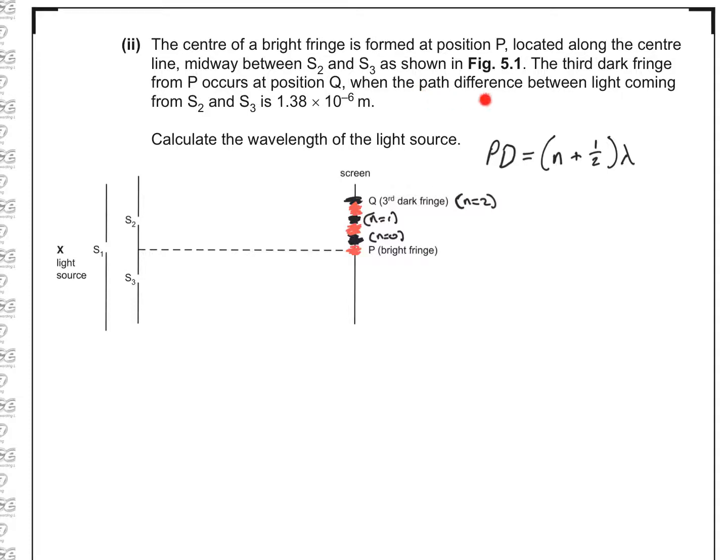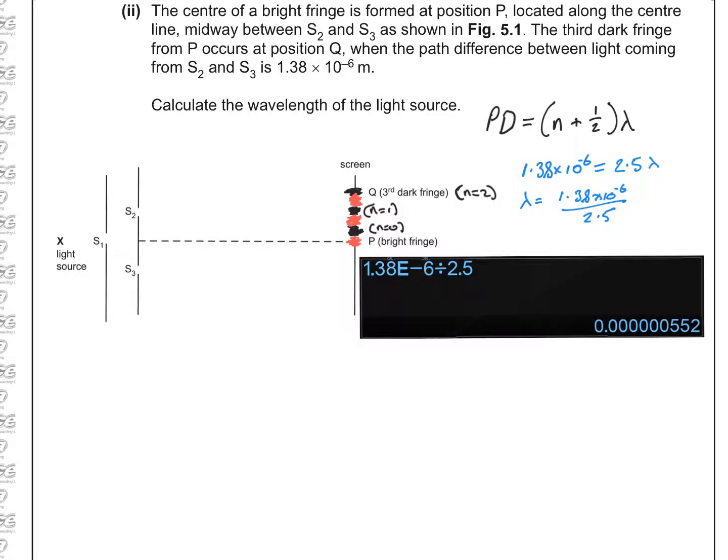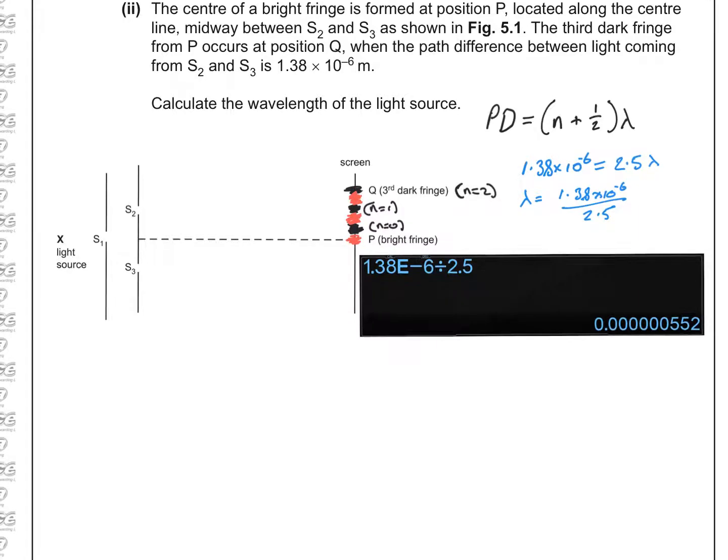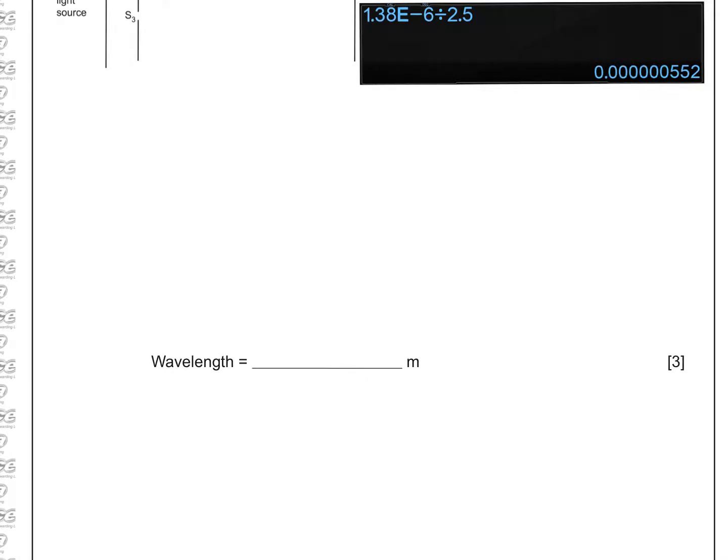So we can substitute into this equation because they've given us the path difference here at that position. And then we just rearrange that to get a lambda value. 1.38 times 10 to the minus 6 divided by 2.5 will give us our lambda. And I'm getting this value of 0.000000552, which is like 552 nanometers or 5.52 times 10 to the minus 7. And they wanted a meter, so that's what we'll do.